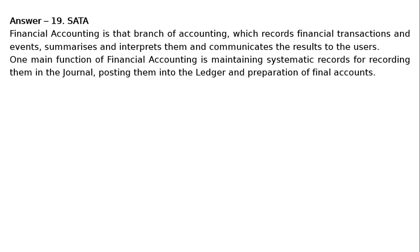Question 19: What do you mean by financial accounting? Explain its one main function. Answer 19: Financial accounting is that branch of accounting which records financial transactions and events, summarizes and interprets them and communicates the results to the users. One main function is maintaining systematic records — recording them in the journal, posting them into the ledger and preparation of final accounts.